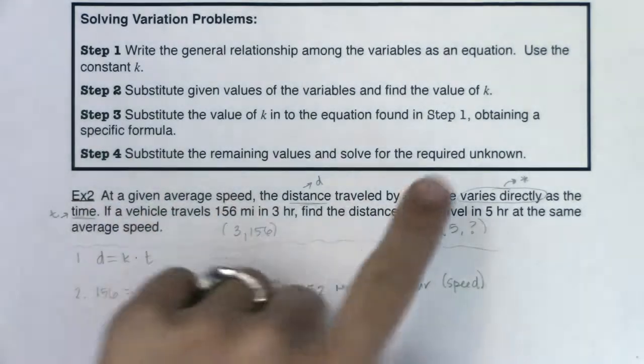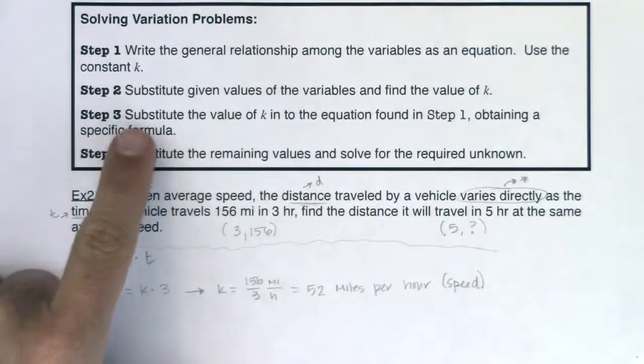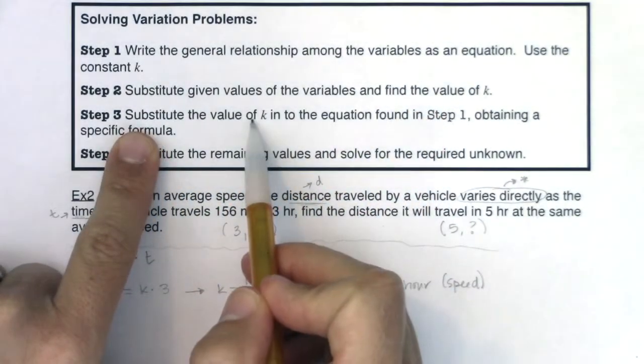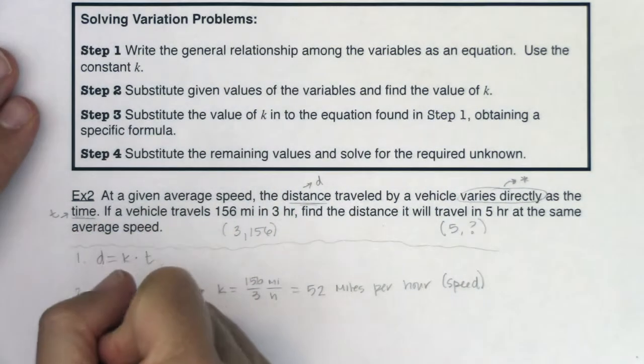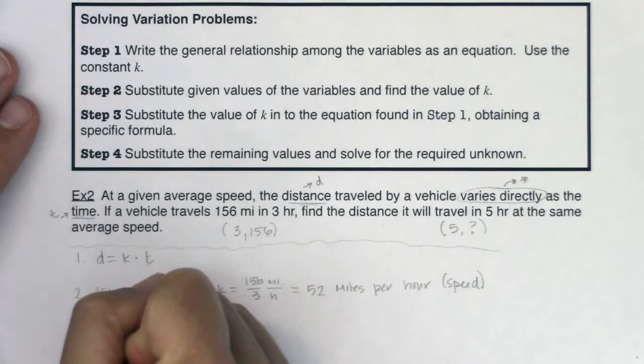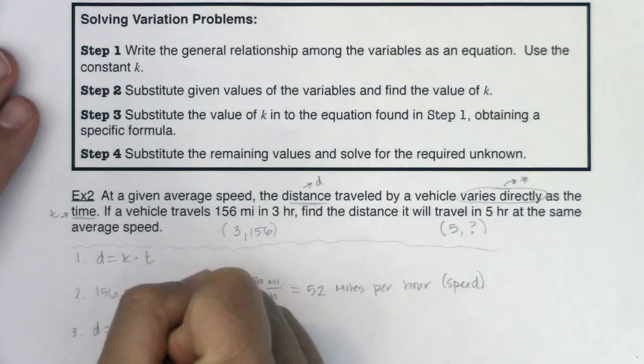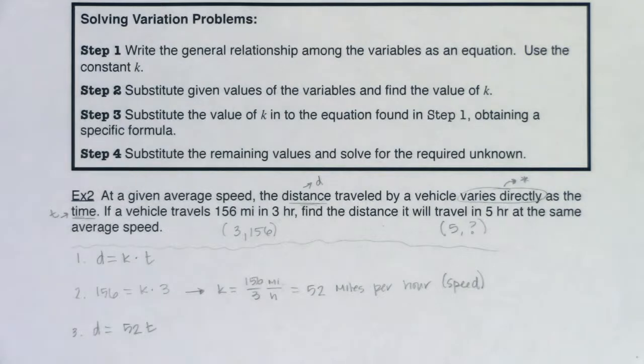So I've found the value of k. I'm going to substitute that value of k into the equation I found in step one. So I'm going to take 52 and write it here for k because I know what k is equal to now. So D is going to be equal to 52T.